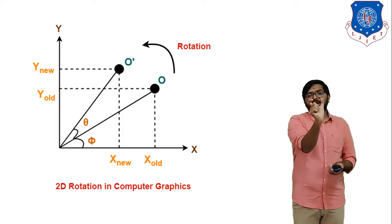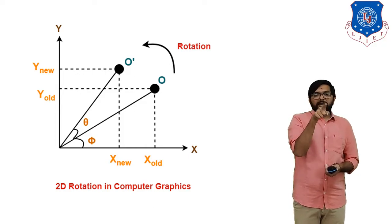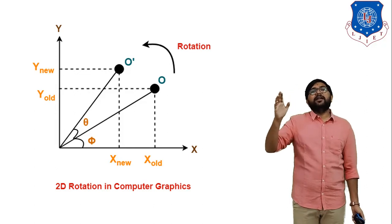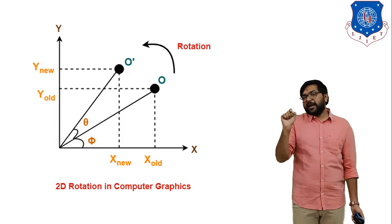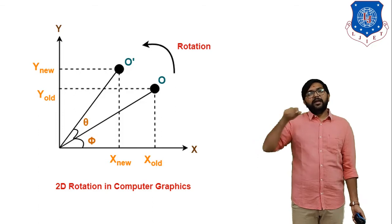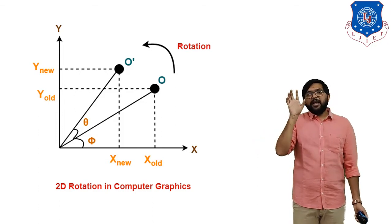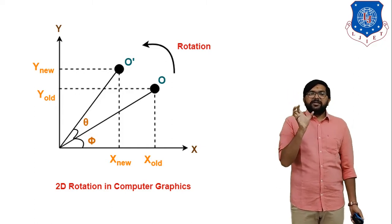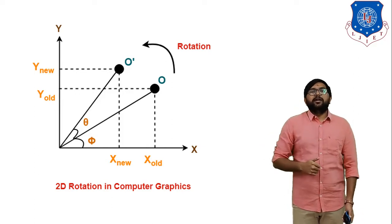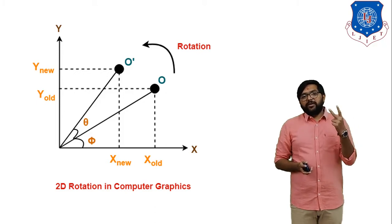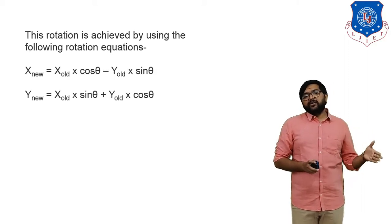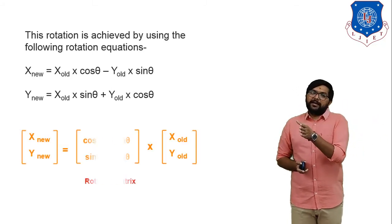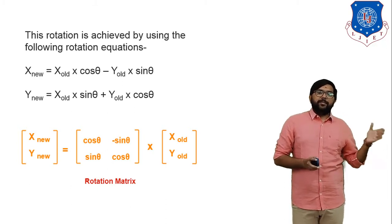Similarly, for y_new: y_new = R sin(θ + φ) = R(sin θ cos φ + cos θ sin φ). Again multiplying R inside and substituting x_old = R cos φ and y_old = R sin φ. This gives the final rotation equations: x_new = x_old cos θ − y_old sin θ, and y_new = x_old sin θ + y_old cos θ.